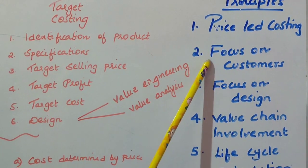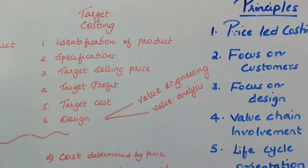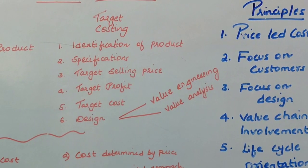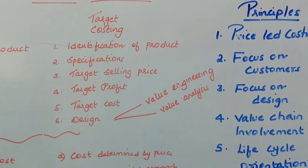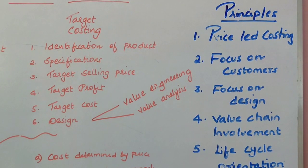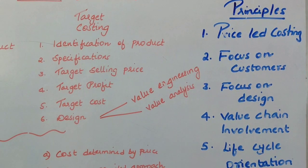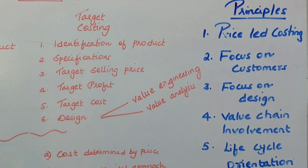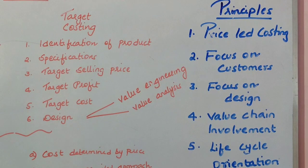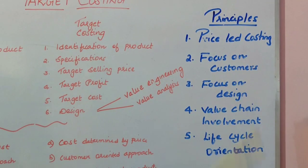The second principle is focus on customers. In target costing, customers are given the highest priority — what specifications the customer needs, what product they need, in what quantity, what quality, and at what price. On the basis of that, costing is done.